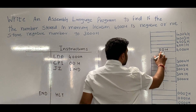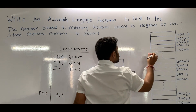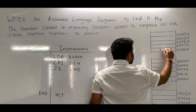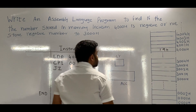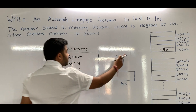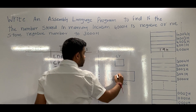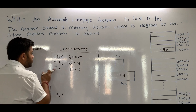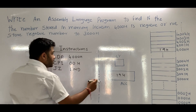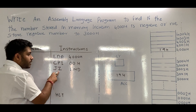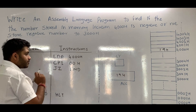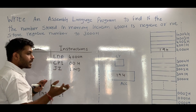Now let's see the second case: the number stored in 4000H is positive. Suppose the data is 19H. The same instruction LDA 4000H loads the data to the accumulator, giving us 19H. We compare with 00H. Since 19H and 00H are not equal, the zero flag will not be set, so the program will not end. We then check whether the number is negative or positive.